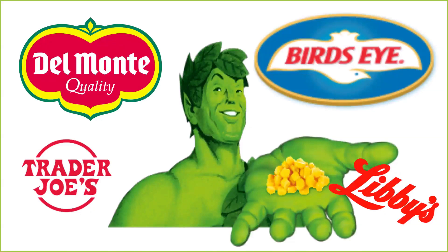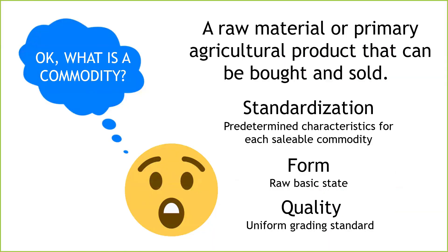I have another question for you: do you think most buyers have the time or inclination to fly all over the world inspecting each producer's commodity? Well, the market thought of that. To facilitate trade, the market guarantees the quality. For a commodity to be saleable in the futures market, it has to meet a minimum standard of quality — it must be usable. Oils and metals must be unadulterated, cows have to be healthy, grains free from rot. For commodities to be bought and sold globally, there has to be uniformity in form — that's the raw state — and the quality has to be usable and pure.